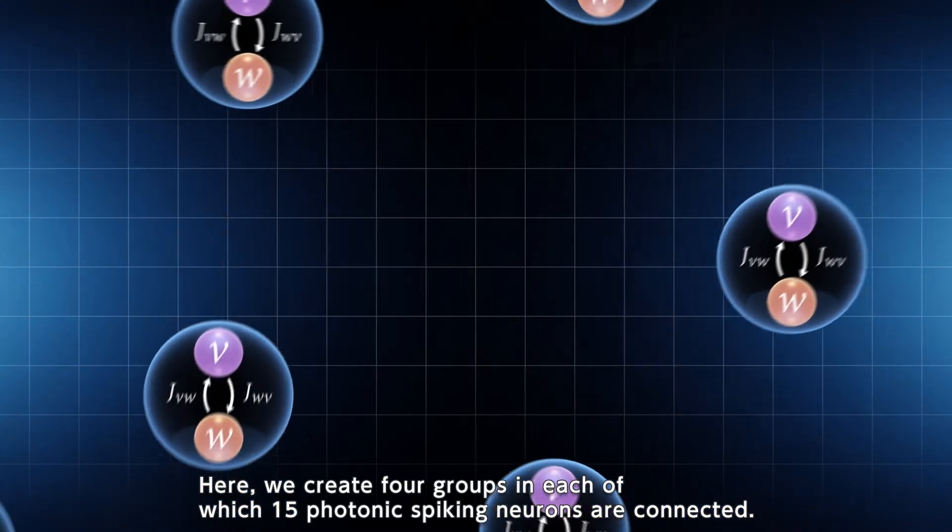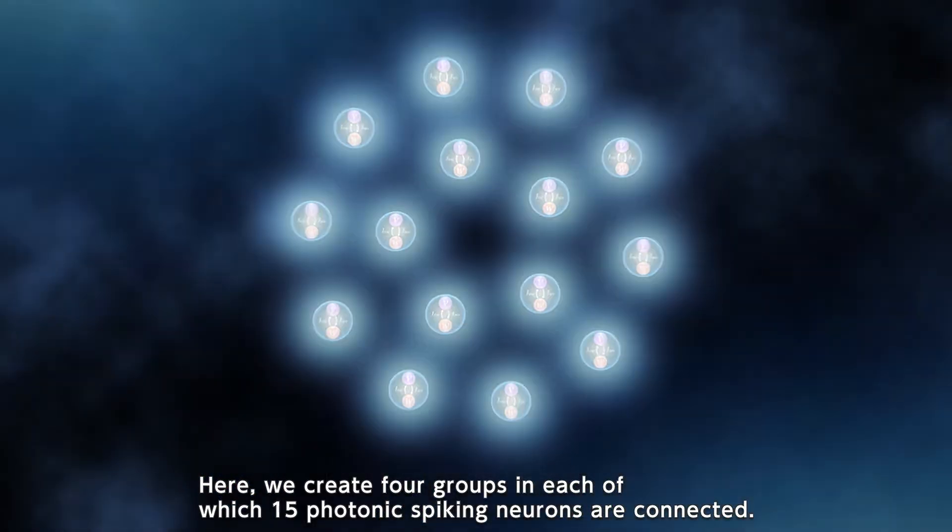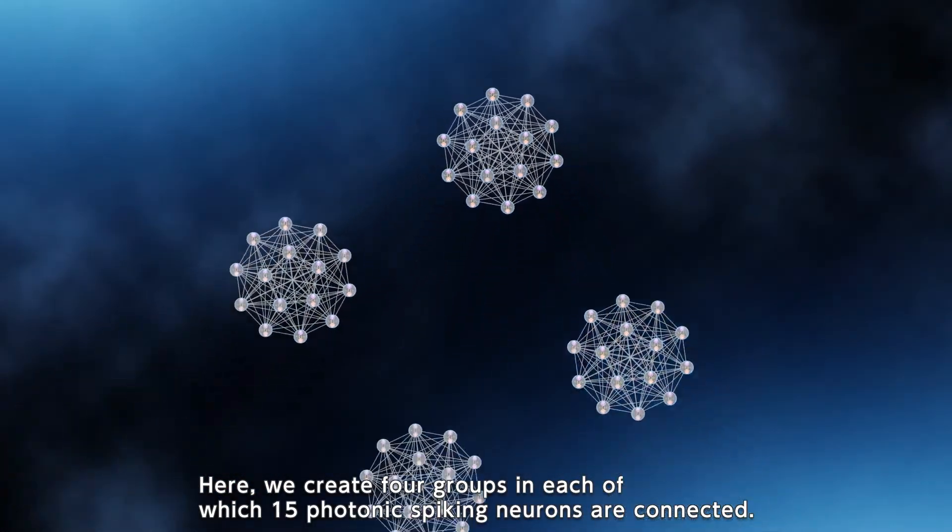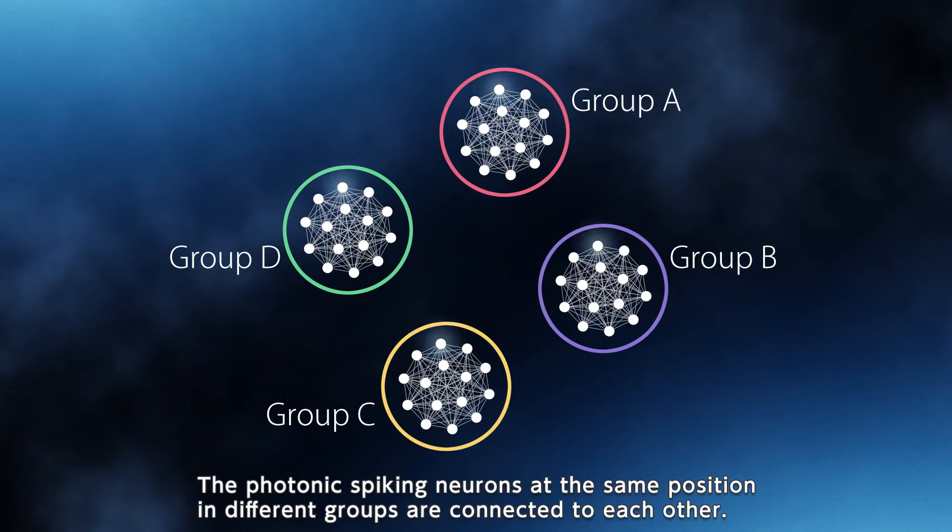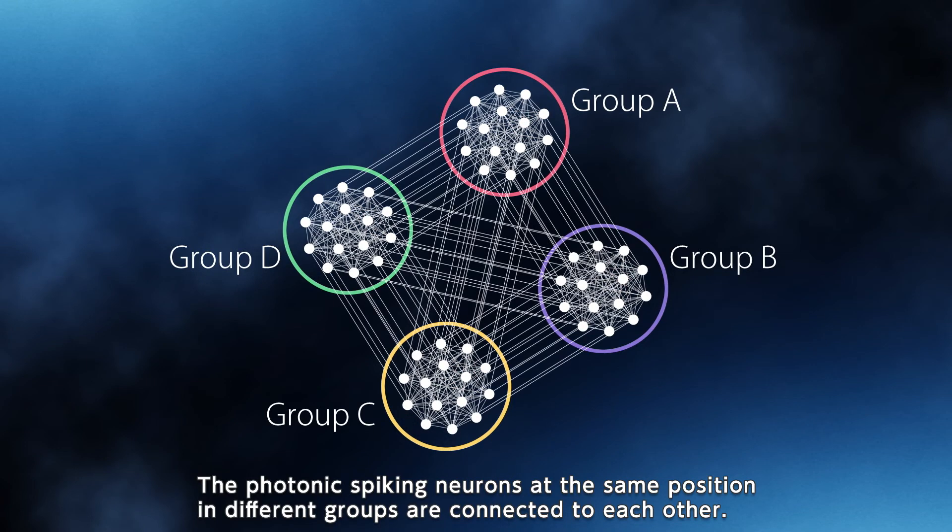Here, we create four groups in each of which 15 photonic spiking neurons are connected. The photonic spiking neurons at the same position in different groups are connected to each other.